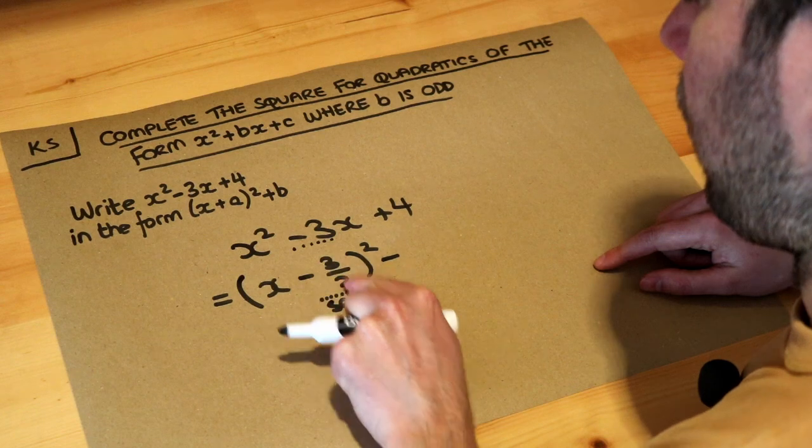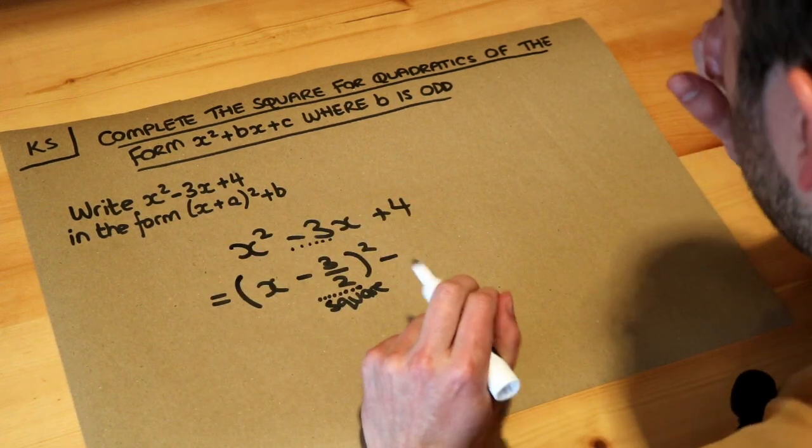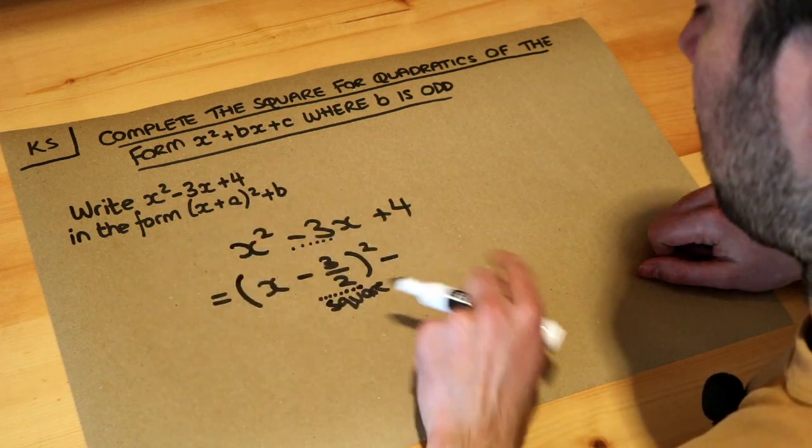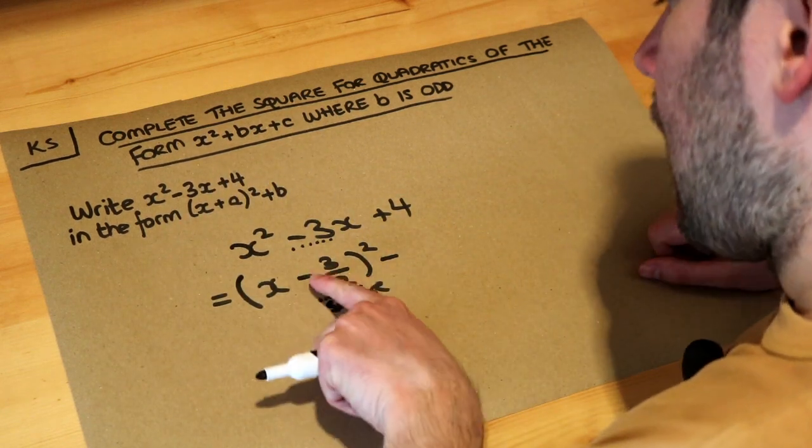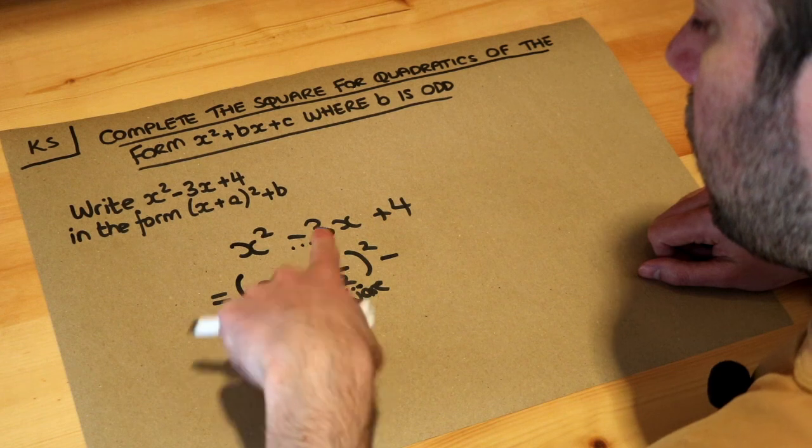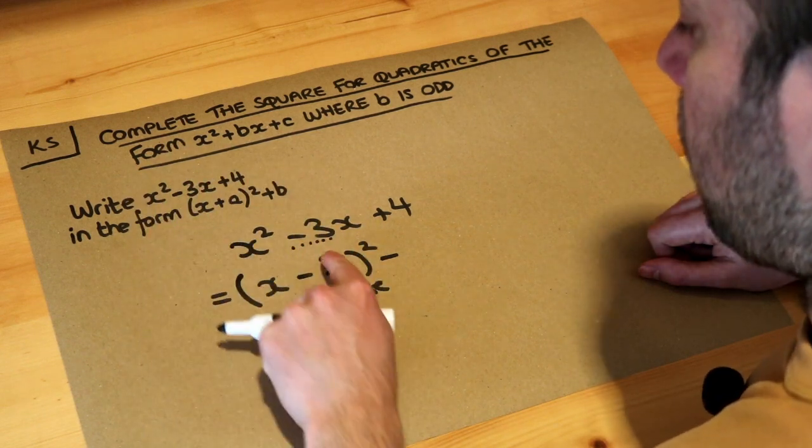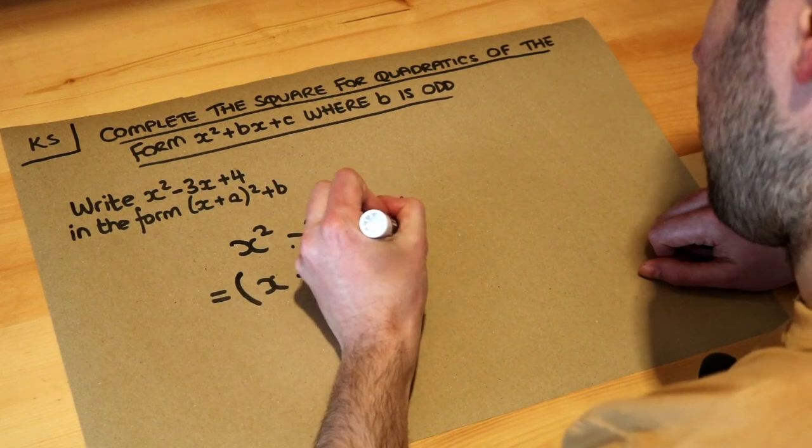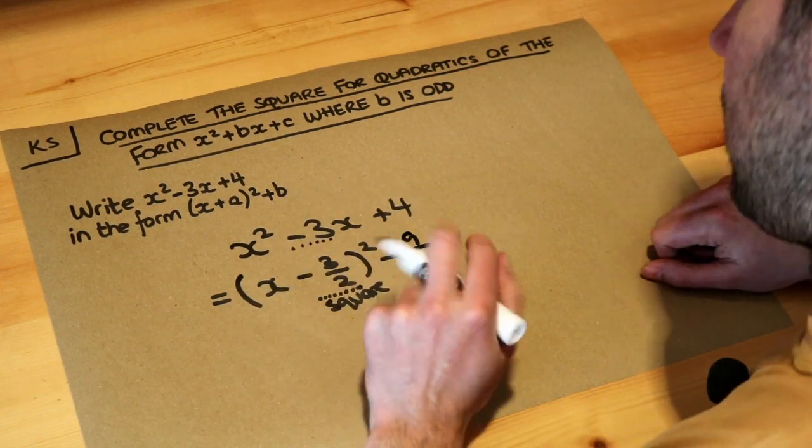Now what's negative 3 over 2 all squared? Well firstly note that when you square a negative number, negative times negative is positive, so it's going to be positive. And when we square 3 over 2, 3 over 2 times 3 over 2, we just square the numerator and square the denominator. So 3 squared is 9 and 2 squared is 4.